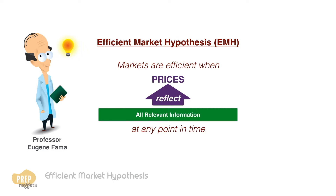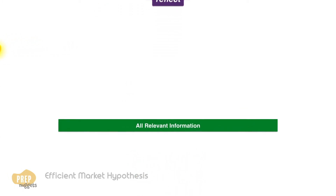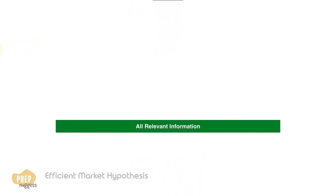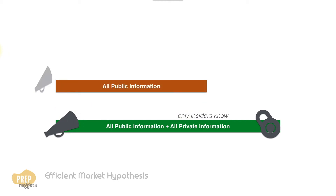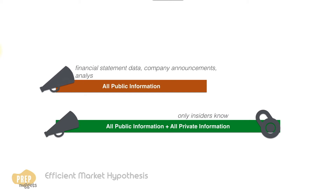Such relevant information can be categorized as three distinct sets. All relevant information refers to all the information that has been made public, and all information that is private that only the insiders or management knows. A subset of this is only all the relevant information that has been made public, which includes financial statement data, company announcements, analyst reports, and past market data.